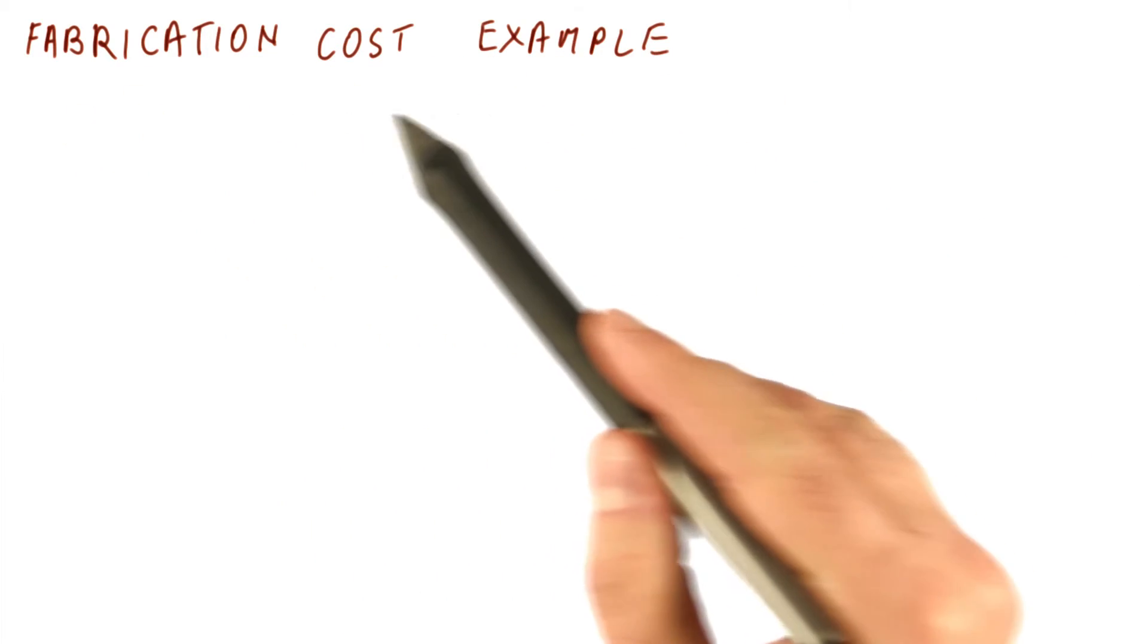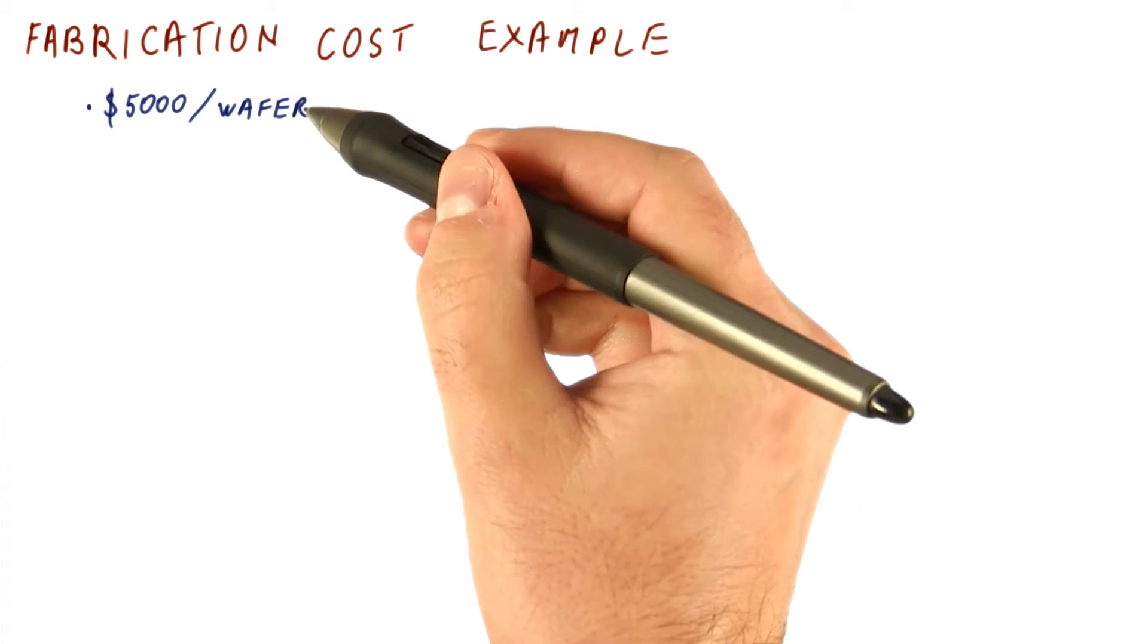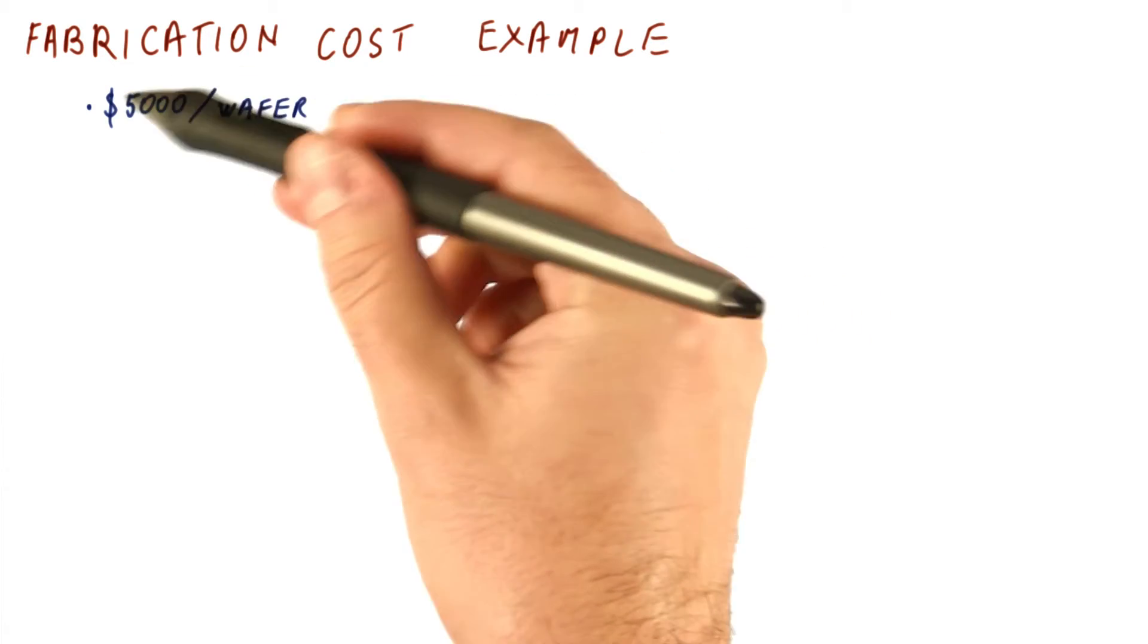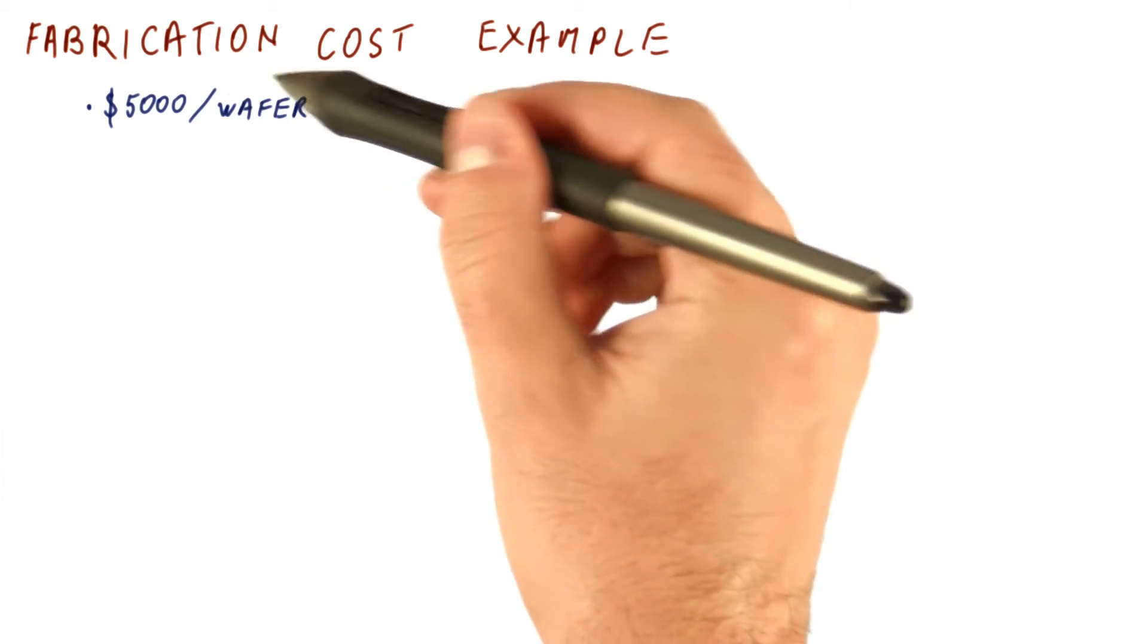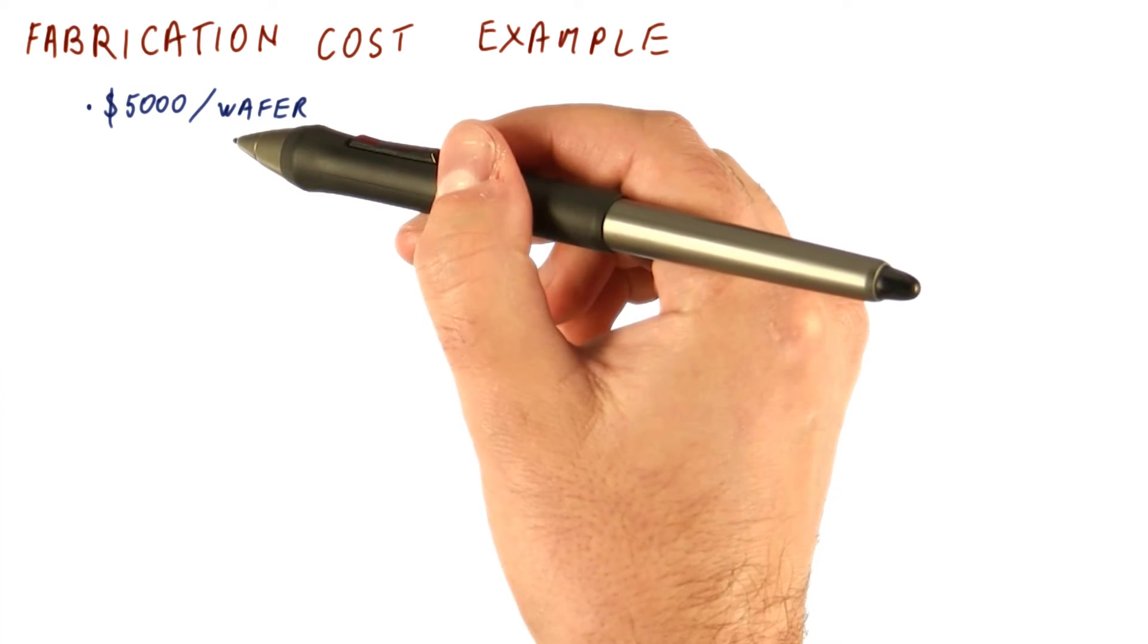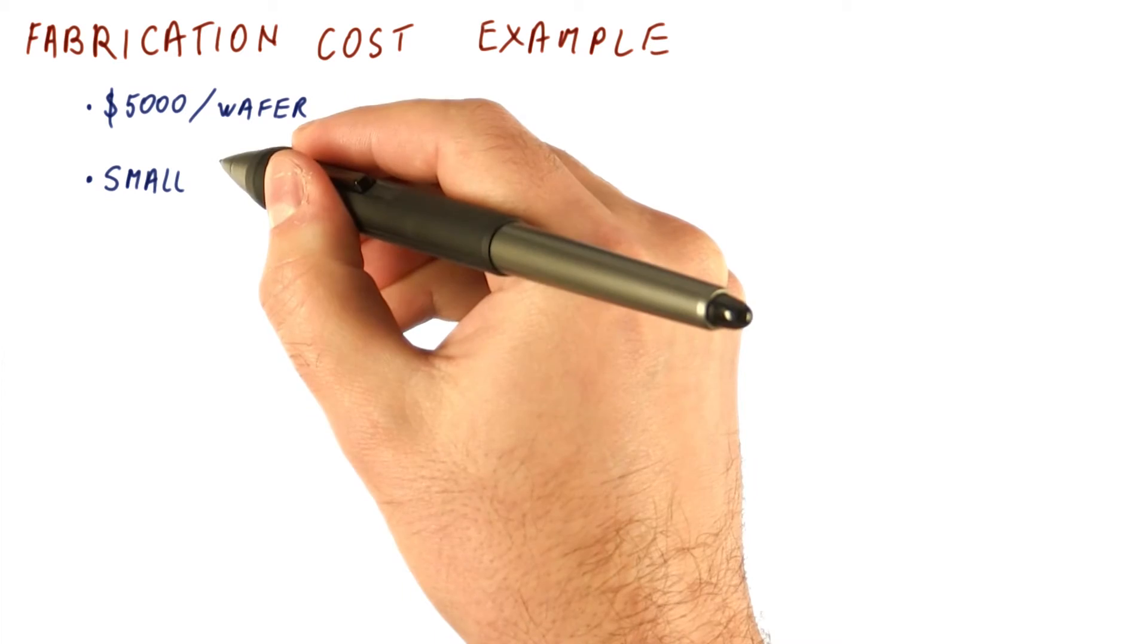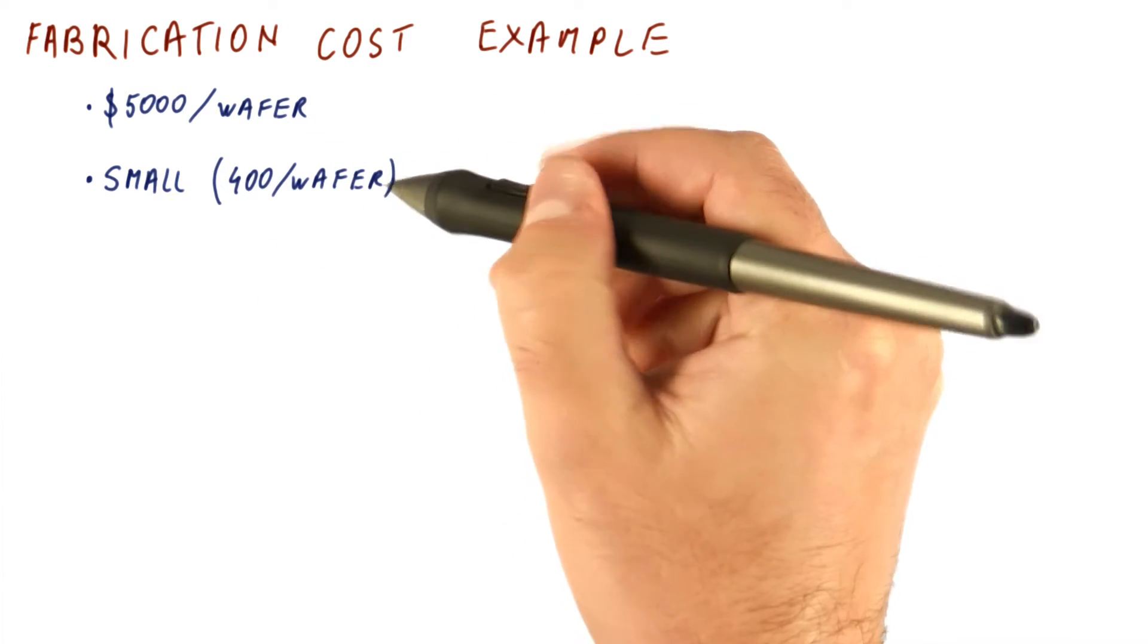Let's look at an example of fabrication costs. Suppose the cost of manufacturing a wafer is $5,000, so we pay $5,000 to manufacture a whole wafer and cut it up into chips. Let's consider what happens when we have some really small chips so that we can fit 400 of them on a wafer.